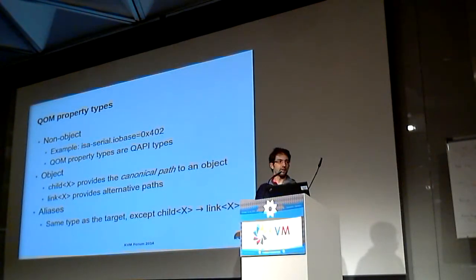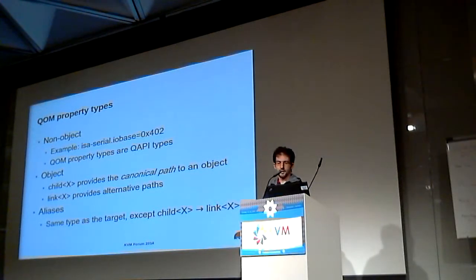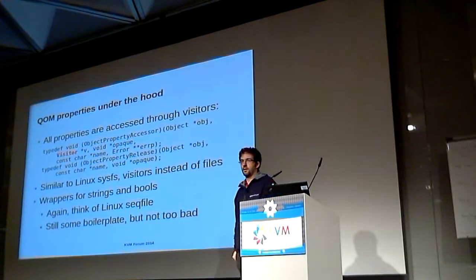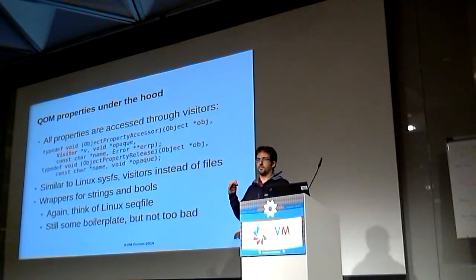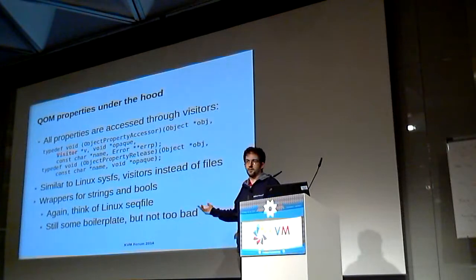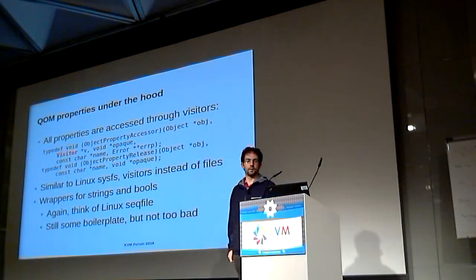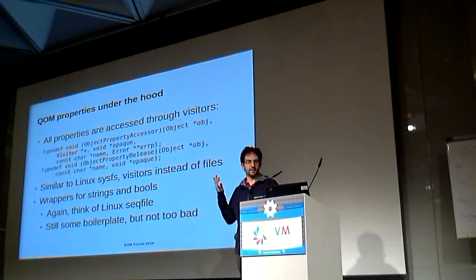An interesting feature added recently is aliases. These usually have the same type as the target, except that children become links — because otherwise you would have multiple canonical paths, which are not so canonical anymore. Under the hood, all properties are accessed via QAPI visitors, which is a fairly central concept in QOM. Just as sysfs abstracts everything around files, we use visitors because that's our API for communication and transporting values in and out of QEMU. You don't have to write visitors all the time — there are wrappers for strings, bools, and some other stuff. You still have some boilerplate code, but it's not too bad in the end.